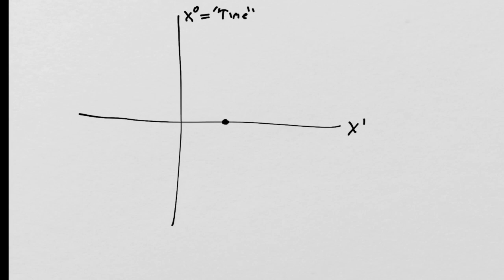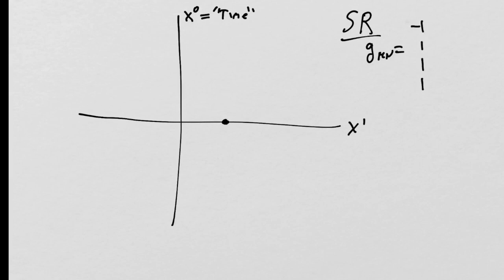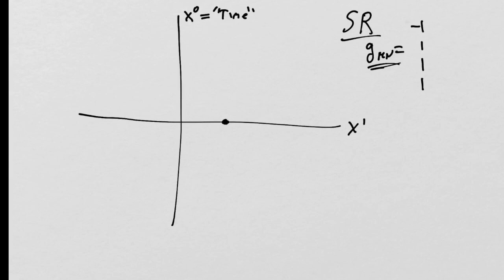We begin by considering the space of special relativity — no gravity, no curvature. The metric of spacetime g_mu_nu is given by diagonal elements (-1, 1, 1, 1) everywhere. We align the time axis of our global coordinate system — a Cartesian system with an x1 coordinate — suppressing the other two dimensions. We assume c = 1, so timelike movement is constrained to a 45-degree light cone, and time is measured in units of distance.